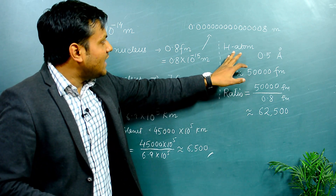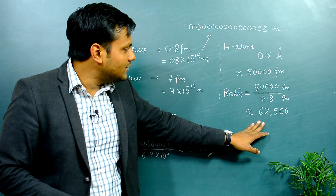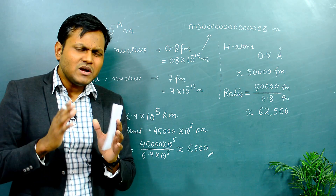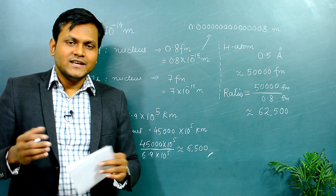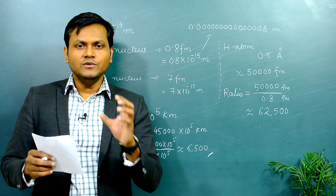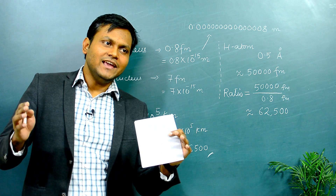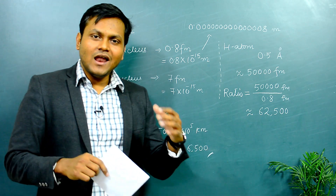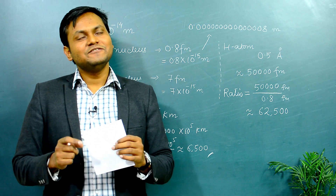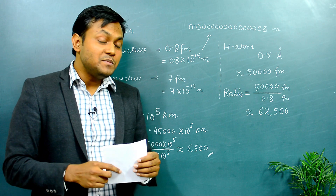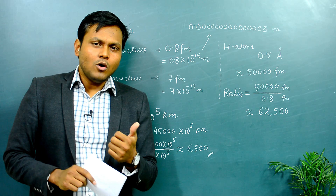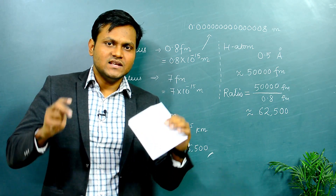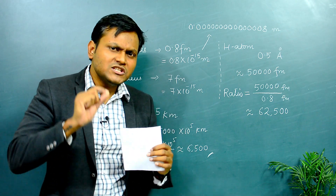The Sun is about 6,500 times smaller than the solar system, but the hydrogen nucleus is about 60,000 times smaller than the hydrogen atom. So if we assume the hydrogen nucleus or proton is the same size as the Sun, the hydrogen atom itself would be much larger than the solar system - in fact about 10 times larger. This shows just how incredibly small the nucleus really is, and that the vast majority of space inside an atom is pure empty space.